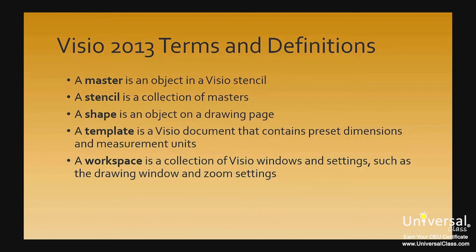A shape is an object on a drawing page — you can create shapes by dragging a master, or other ways. A shape can be a line, polygon, or image, and can change appearance or behaviour as data values change. A template is a Visio document containing preset dimensions and measurement units, and may also contain stencils, background pages, designs, shapes, or text. A workspace is a collection of Visio windows and settings, such as the drawing window and zoom settings, including size, position, pan and zoom, and shape data windows. Visio saves the workspace when you save the file.